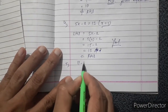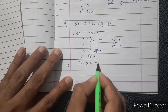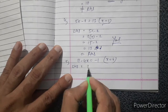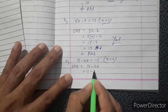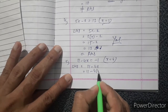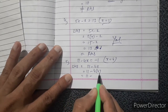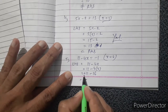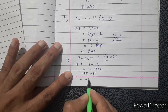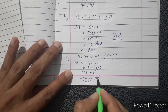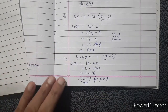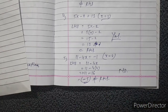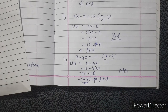Fifth: 11 minus 4x equals minus 1, with x equals 4. LHS: 11 minus 4 into 4 equals 11 minus 16. Sign of biggest number is minus, so that gives minus 5. This is not equal to RHS which is minus 1. So x equals 4 is not a solution of the given equation.